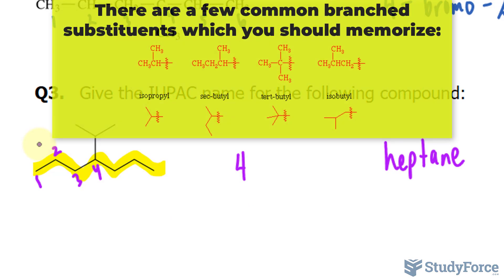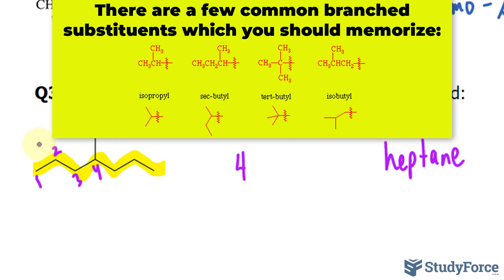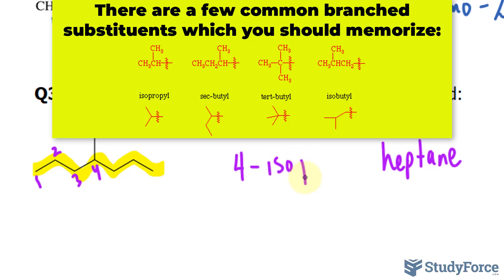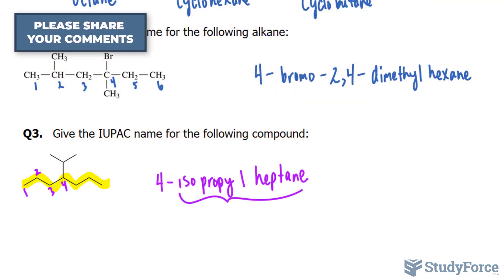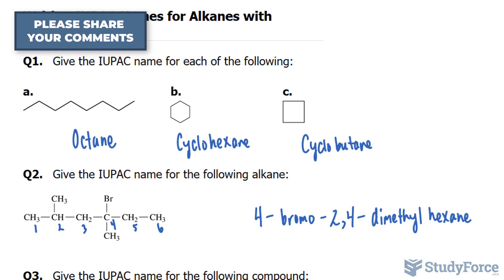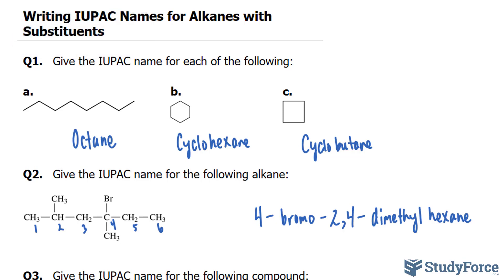Now of course, you would need to know that to answer this. You couldn't just figure it out on your own. But it's a common name. You say 4-isopropyl-butane. And that's all one word. And there you have it. A short lesson on how to write IUPAC names for alkanes with substituents.